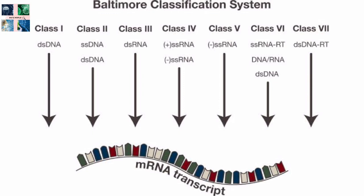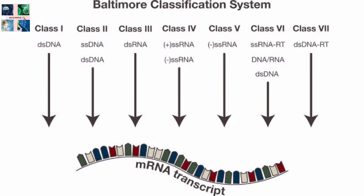The Baltimore classification places viruses into one of seven groups designated by Roman numerals, discriminating viruses depending on their mode of replication and genome type. It is based on the mechanism of mRNA production. Viruses must generate mRNAs from their genomes to produce proteins and replicate themselves, but different mechanisms are used in each virus family. Viral genomes may be single-stranded or double-stranded, RNA or DNA, and may or may not use reverse transcriptase. Single-stranded RNA viruses may be either plus-sense or antisense.